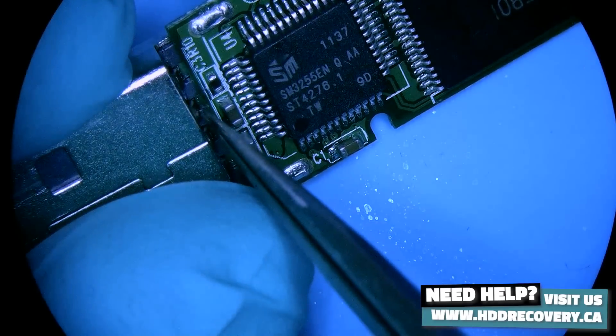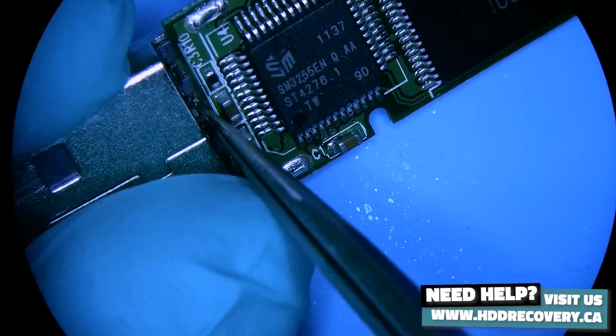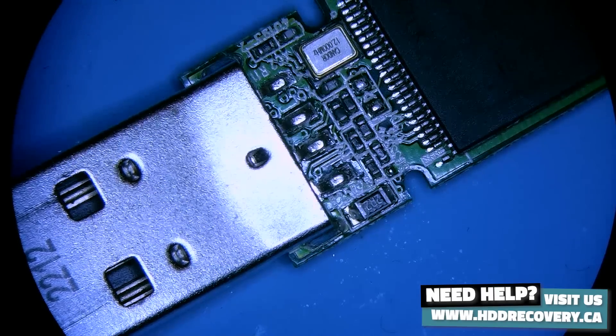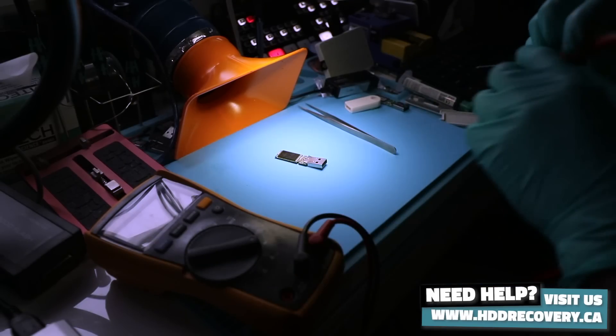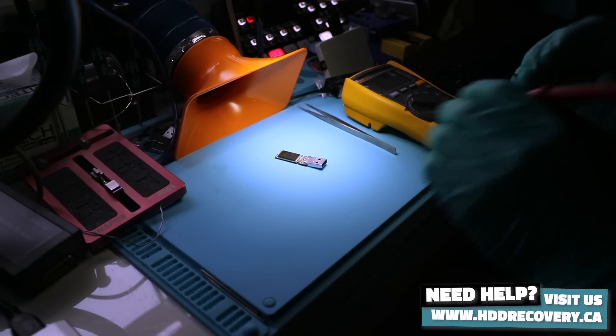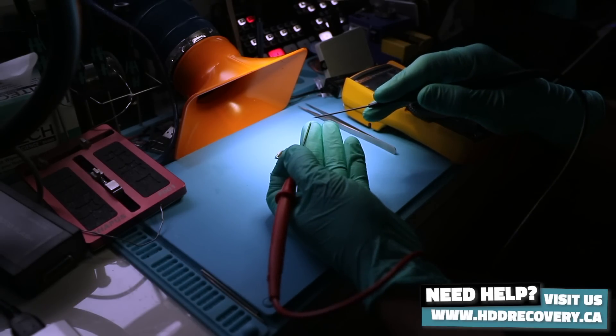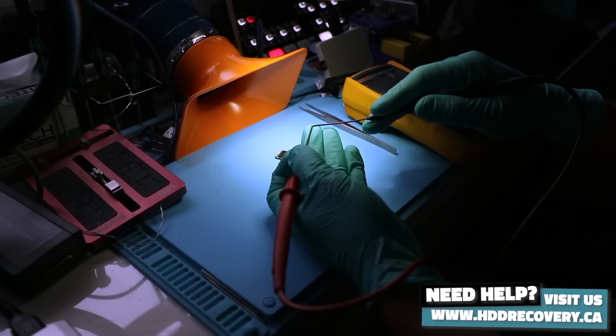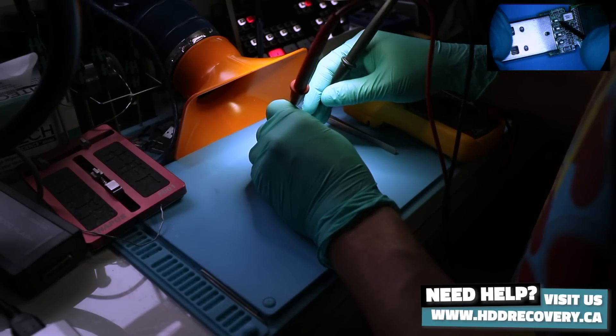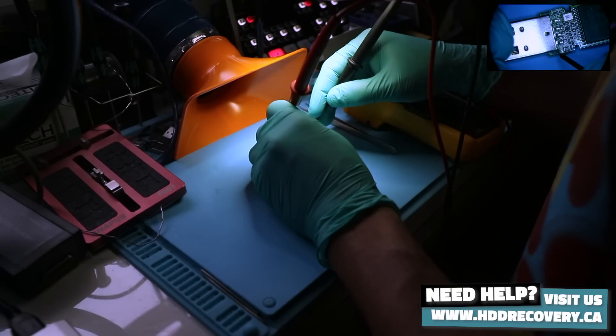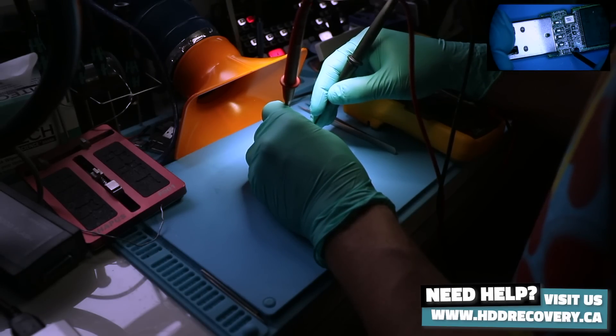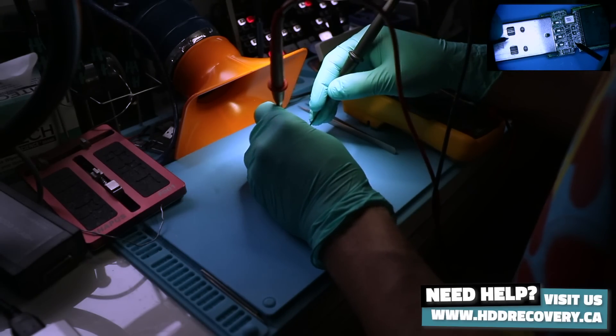We may have breaks on the traces heading into the connector, but that is something we can definitely test. If we set our multimeter to diode testing, if we have connection, it's gonna make this sound. We're gonna test the ground first. Ground is getting there and the ground is present. Five volt getting to the header, getting to the resistor.